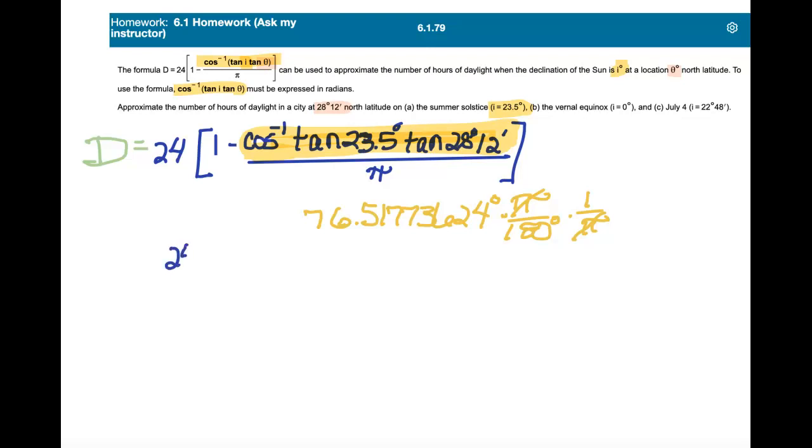24 times 1 minus all of this stuff right here, the 76.51773, divided by 180.